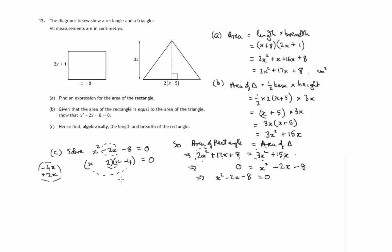So by negative 4x plus a 2x would give me a minus 2x. So that must be minus the 4x plus the 2x. So x plus 2 times x minus 4 equals 0. Something times something is 0. One or other of these or both might be 0.